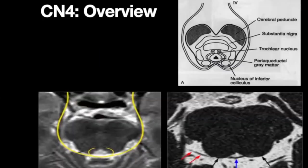The 4th, trochlear, cranial nerve is one of the thinnest cranial nerves and is very hard to see unless you have taken 0.5 mm CISS or FIESTA sequences. It arises from the dorsal aspect of the midbrain, unlike the other cranial nerves.